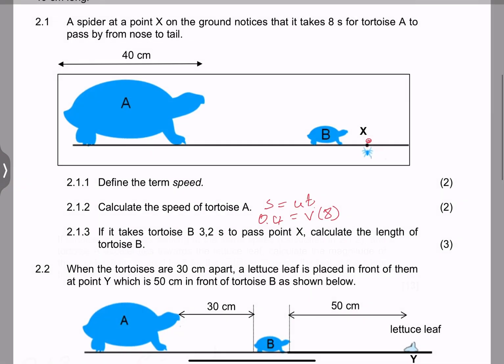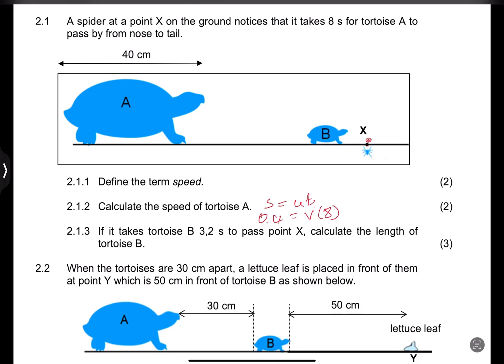That's going to be question 2.2. Let me just use the diagram here. We want this guy to catch up, that is tortoise A. So the distance that tortoise A has to move is that entire distance there to reach the leaf. That would be 30 centimeters plus the length of this tortoise, which is 16 centimeters or 0.16, and plus the 50. That gives me 96 centimeters.